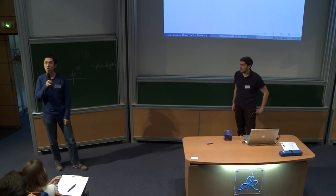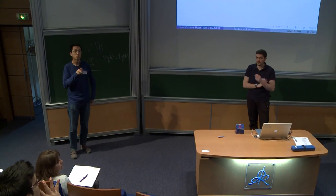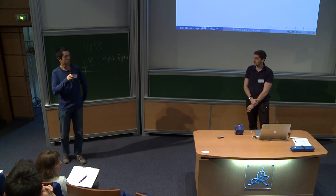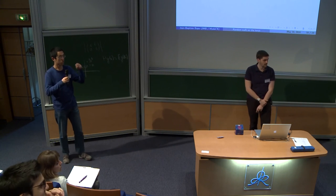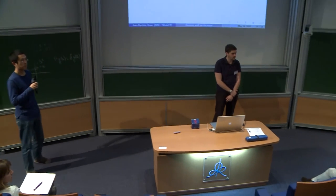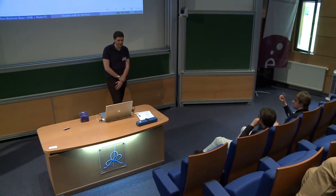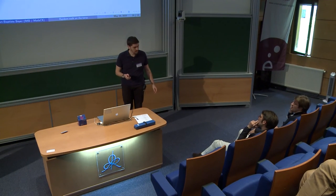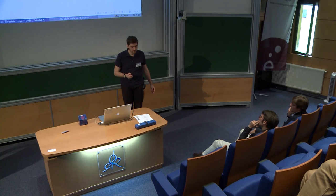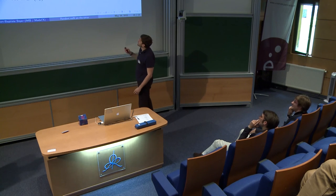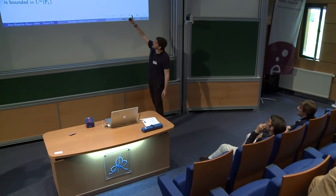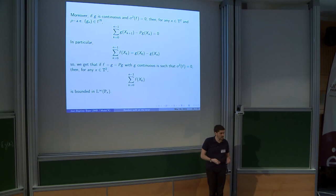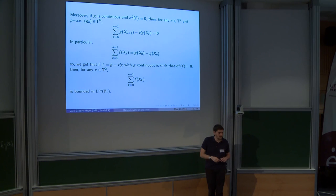Thank you. Any questions? So, when the variance is equal to zero, your sum remains bounded? Yes. I mean, do you have the convergence in law, for example, for the sum? When the variance is equal to zero, the sum is equal to this g of x₀ minus g of xₙ. So, I don't think we can say many things. Okay.